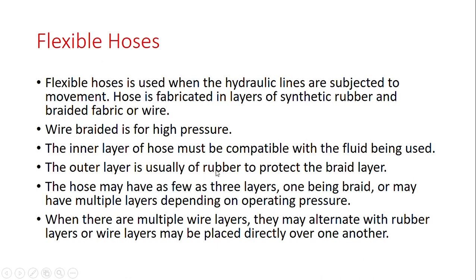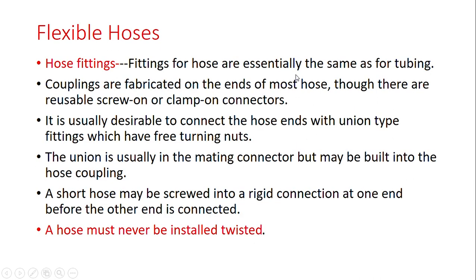The hose may have three layers, one being braided, and may have multiple layers depending upon operating pressure. When there are multiple wire layers, they may alternate with rubber layers, or wire layers may be placed directly over one another. Fittings for hose are essentially the same as for tubing. Couplings are fabricated on the ends of most hose, though there are reusable screw-on or clamp-on connectors.